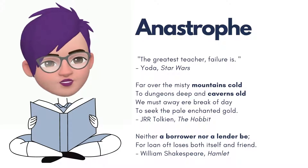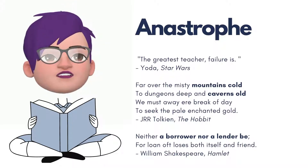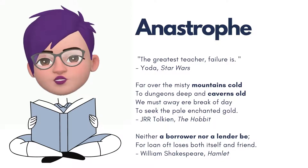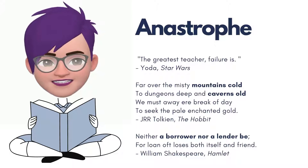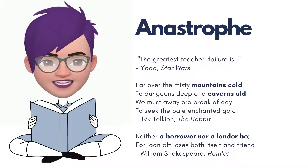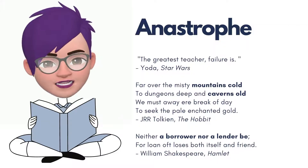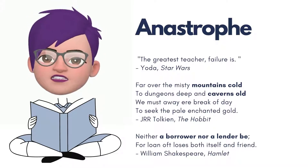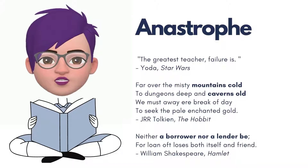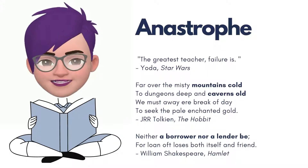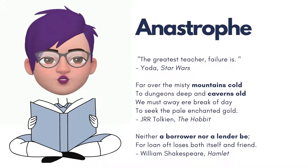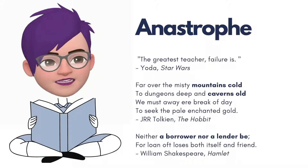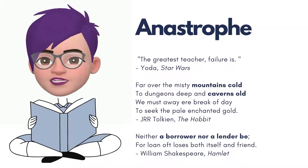Inversion, also known as anastrophe, is a literary technique in which the normal order of words is reversed in order to achieve a particular effect of emphasis or meter. Inversion is achieved by: placing an adjective after the noun it qualifies — for example, 'the soldier strong'; placing a verb before its subject — for example, 'shouts the policeman'; or placing a noun before its preposition — for example, 'worlds between.'